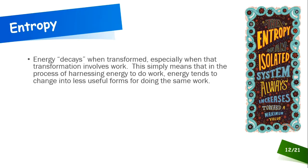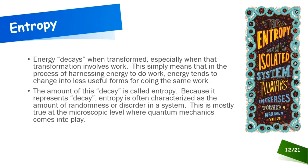Whenever you transform energy from one form to another, that transformation involves work. In the process of harnessing energy to do work, energy tends to change into less useful forms. Some energy gets transformed into the work we want done, but a large portion transforms into a form not available for doing that same work. This unavailability means energy is said to 'decay,' and the amount of decay is what we call entropy.